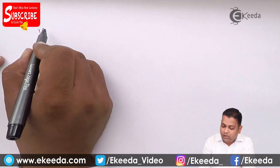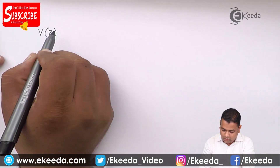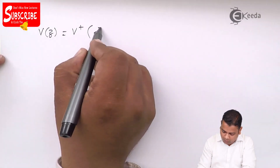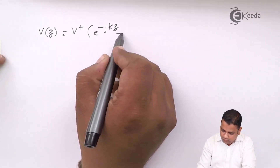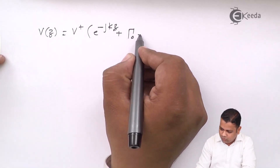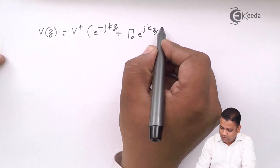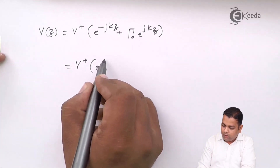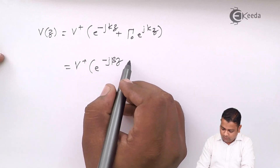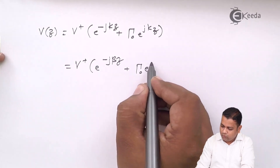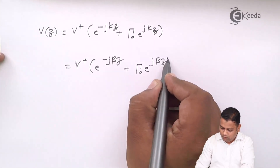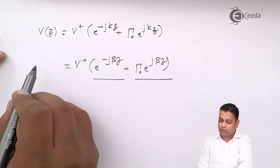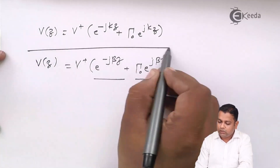The equations of voltage and current can also be modified. The voltage V(z), which in general is V⁺·e^(−jKz) + Γ₀·e^(+jKz), becomes for the lossless line: V⁺·e^(−jβz) + Γ₀·e^(+jβz). These are the two terms — a forward and reflected wave — since attenuation alpha equals zero for the lossless line.